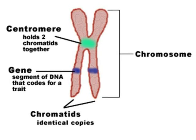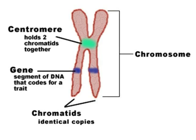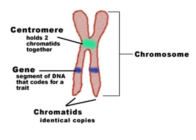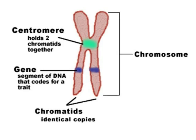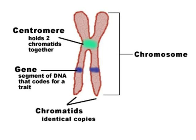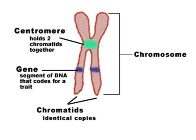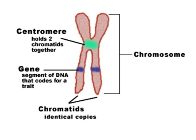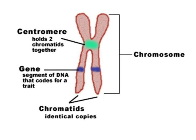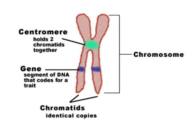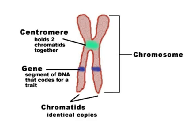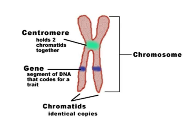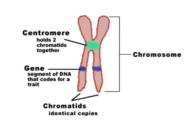A chromosome is actually made of two chromatids. These chromatids have matching information, as chromosomes only appear in the cell once the DNA has been copied. Each of the chromatids is held together at the center by a centromere. Chromosomes carry genes. Genes are segments of DNA that determine traits or characteristics.